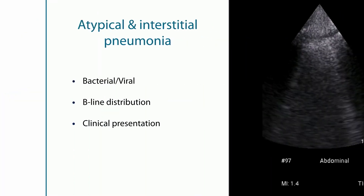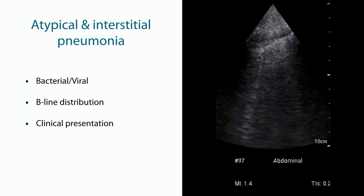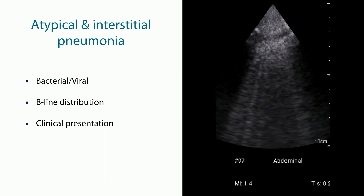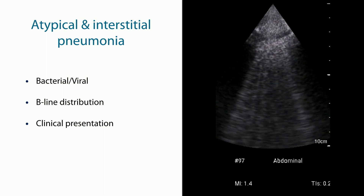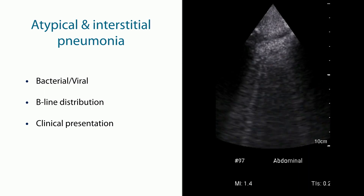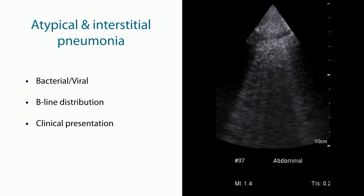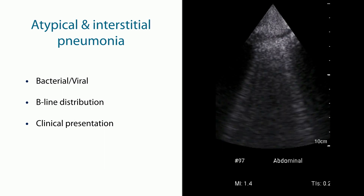Then we have the problem of atypical interstitial pneumonias. In atypical or interstitial pneumonias — which can be bacterial or viral — we see B-lines and they can have various distributions. Again, we have to look at our patients: if a patient has high fever, feels terribly sick, and we see this B-line distribution, this is suggestive of pneumonia. In this circumstance you can also use chest x-ray, because in interstitial pneumonias, chest x-ray is actually better for imaging.